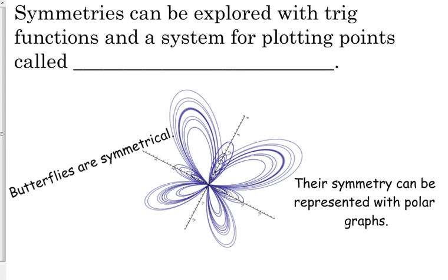So based on all those pictures, you can probably see that there are a lot of symmetries in those graphs. Here's another example of a polar graph that is very symmetric. This one looks somewhat like a butterfly. And then we can represent that symmetry using polar graphs.